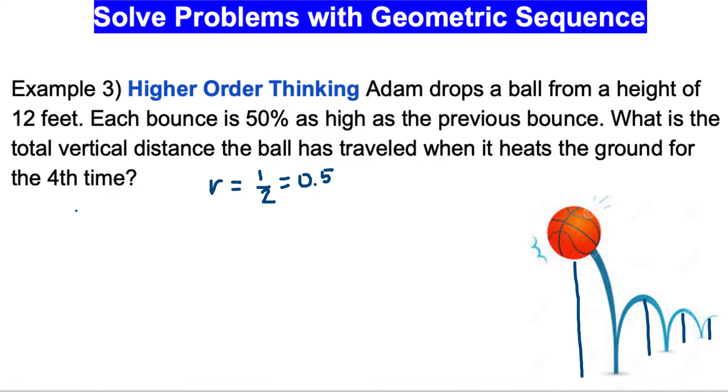So a1, the first term here, what was the first term? The first term is equal to 12 feet. So a1, we don't have to calculate everything, is 12.